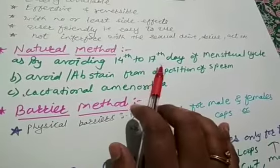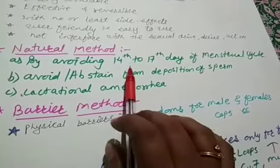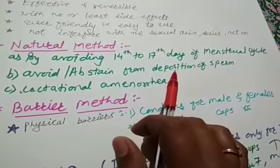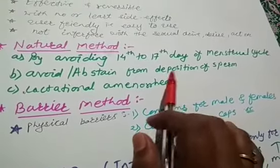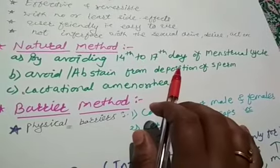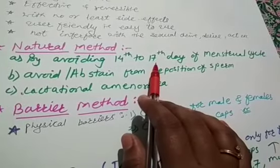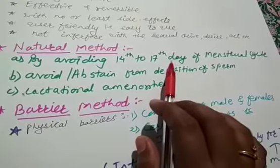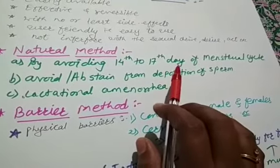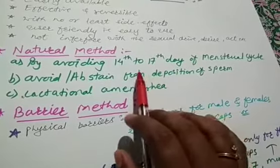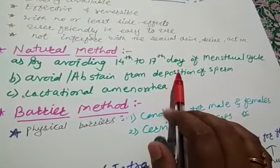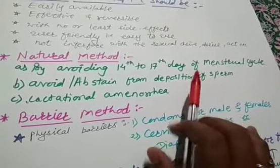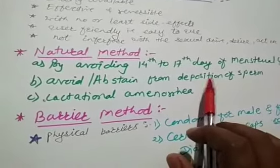In periodic abstinence, couples avoid or abstain from coitus from the 10th to 17th day of the menstrual cycle, as we studied date-wise changes in the female body in the previous chapter. This period is when ovulation is expected. The availability of the egg is around 24 hours for ovulation, so avoiding sexual intercourse during this period reduces the chances of pregnancy. Due to little variation in timing, the advice is to avoid sex from the 10th to 17th day. This method is also called the rhythm method or calendar method.